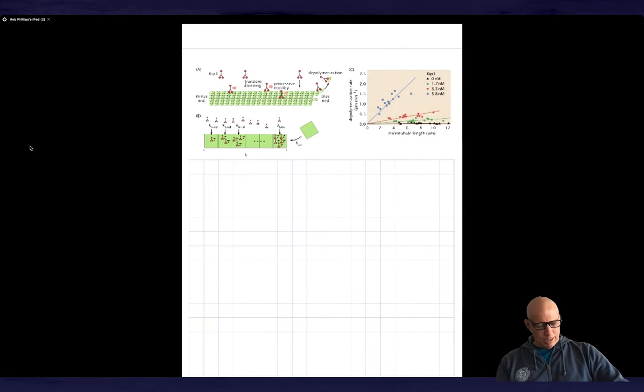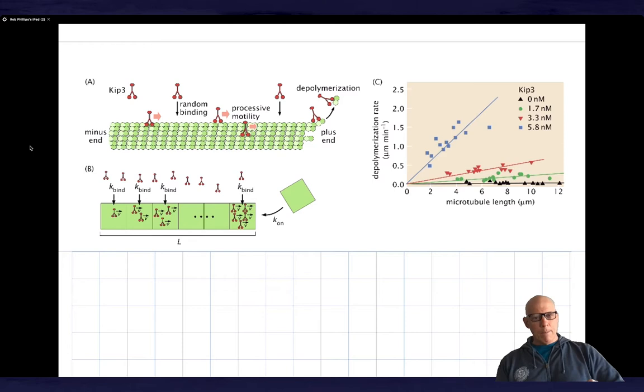And let's see. I guess I just want to give you one last impression of interesting data. And this is what we'll comment on is that the depolymerization rate is a function of how long the microtubules are. So the longer they are, the faster they depolymerize. And this legend shows you the dependence on concentration of motors. So that's the scheme.